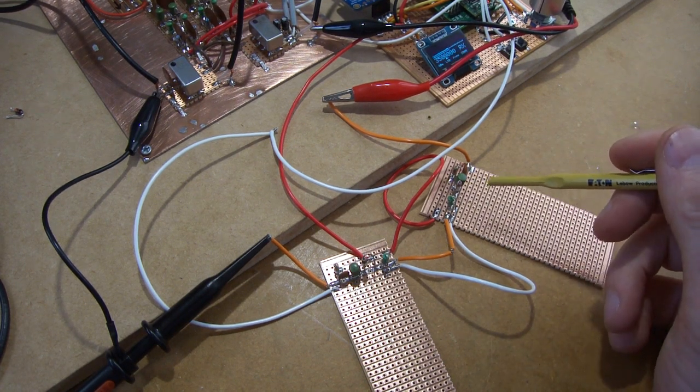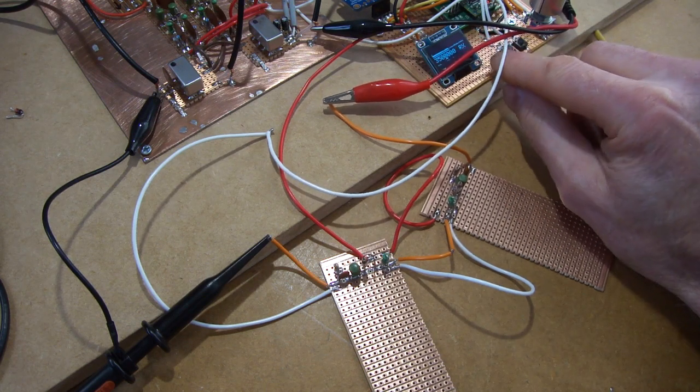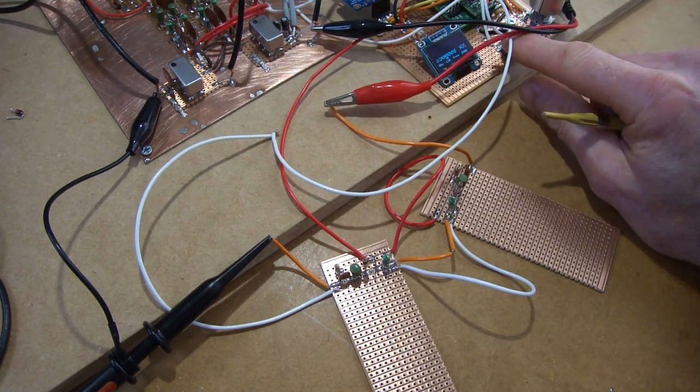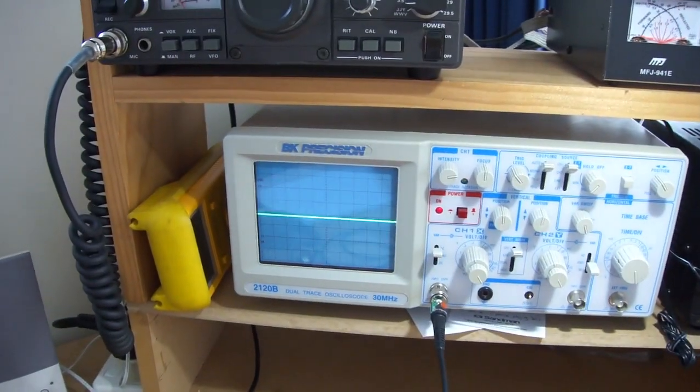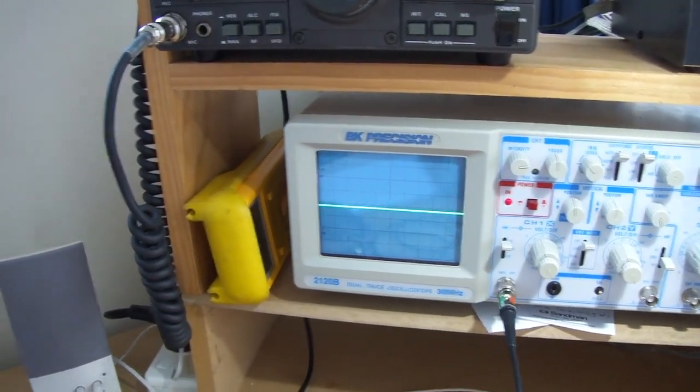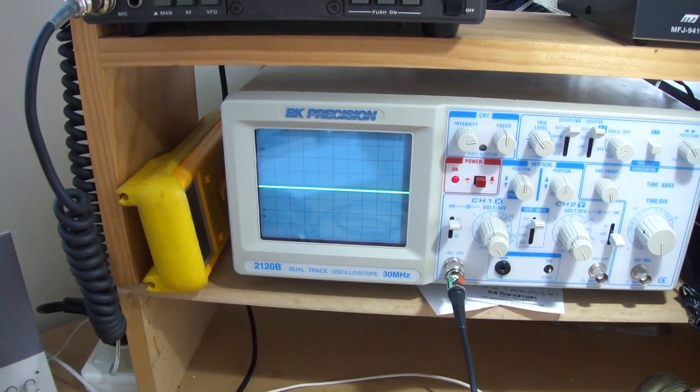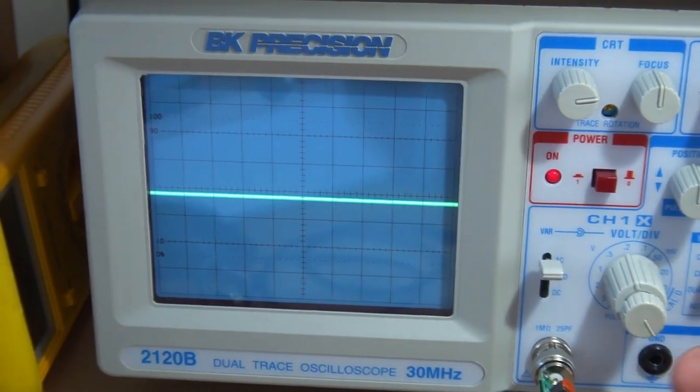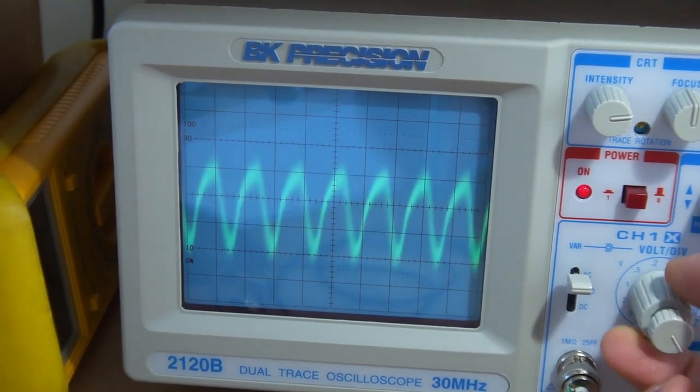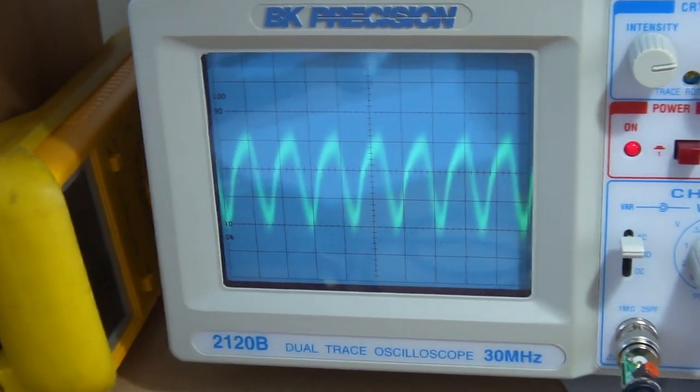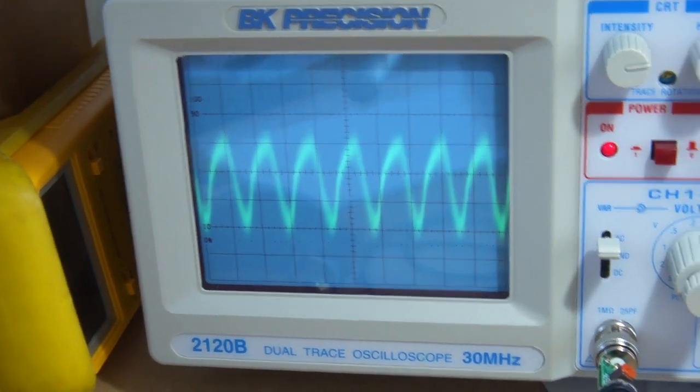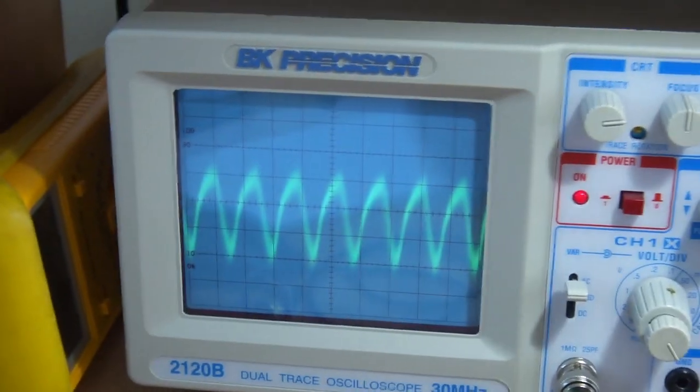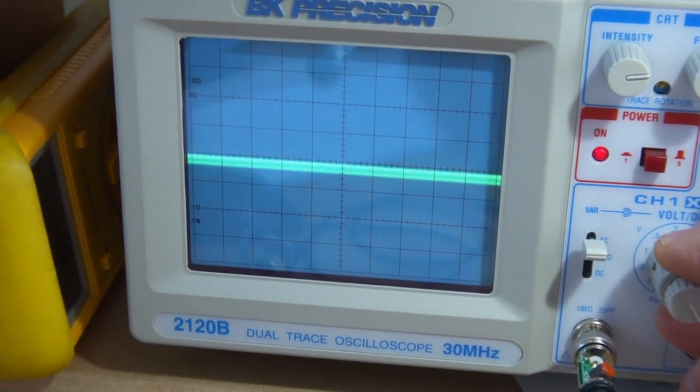But interestingly enough, if we now cycle to off, so it's currently on 80 metres, bottom left hand corner, and if we just cycle it to off, you'll see it disappears. And what we're not seeing now is so much leakage through it. So I had to crank this right up way past what it was before. So we're now on 5 millivolts per division. So 5, 10. So it's about a third less than we had before.